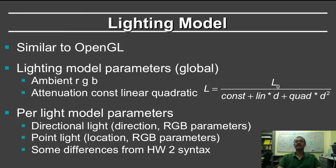For your homework, the lighting model used is really the same as in OpenGL. You have lighting model parameters globally, which is the ambient RGB, and the attenuation, which is constant, linear and quadratic. D is the distance to the light source.